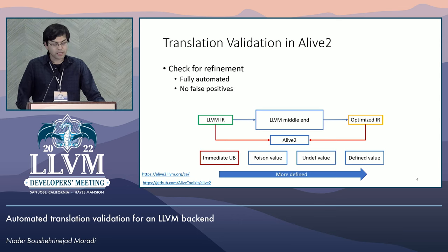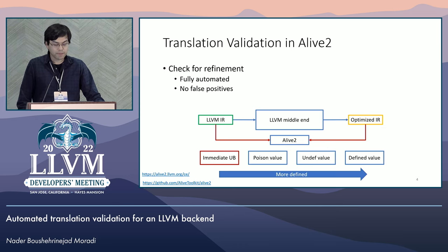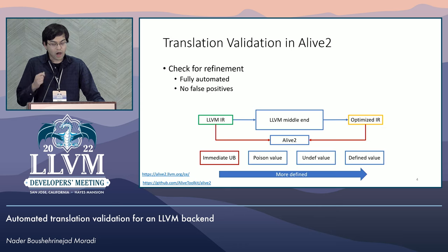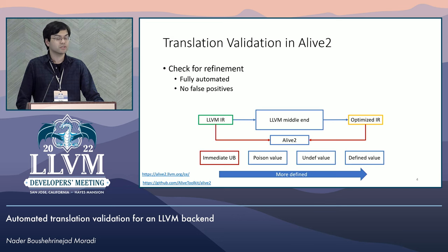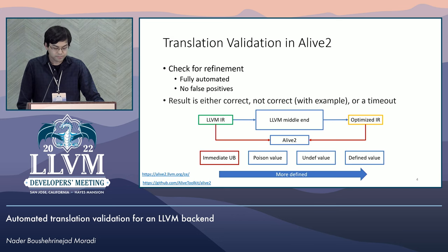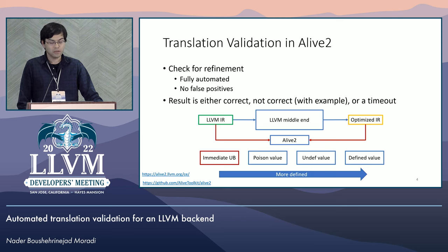Alive 2 is fully automated. It uses an SMT solver to perform the refinement check. Further, it's designed to not report any false alarms. For a given pair of LLVM IR functions, Alive 2 checks for refinement between the source and the target of the transformation and produces three possible results: correct, not correct with example, or timeout.